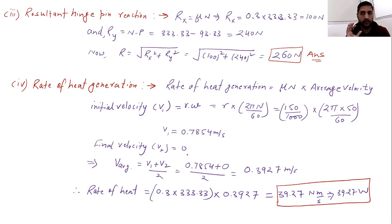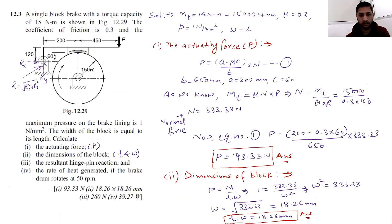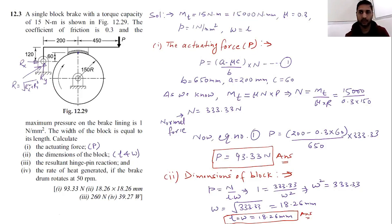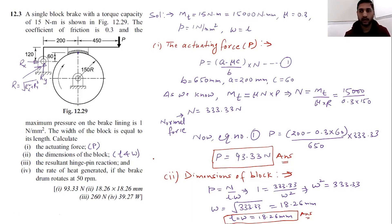We have found all the required values: actuating force, dimensions of the block, resultant hinge pin reaction, and rate of heat generation. I hope the design of the block brake with short shoe is now clear to you. If you have any doubts, feel free to ask. Thank you so much.